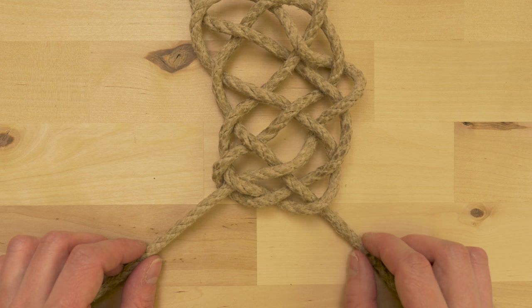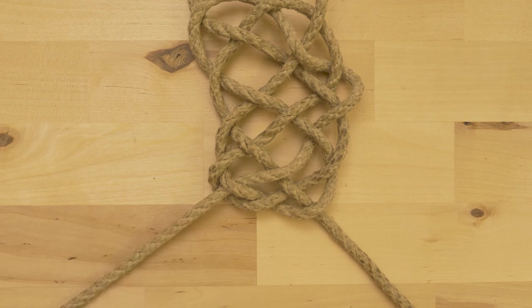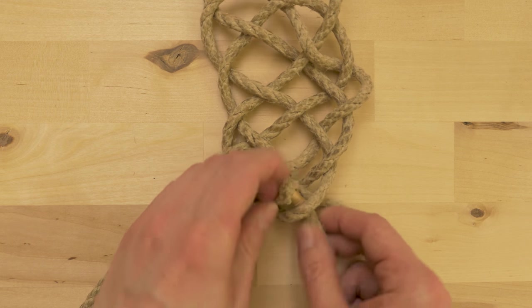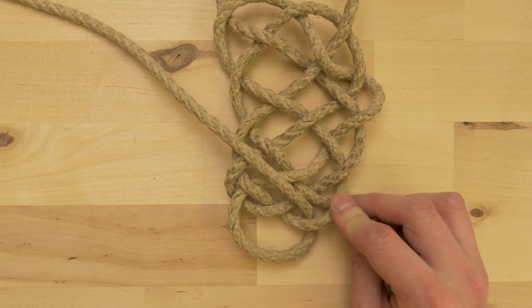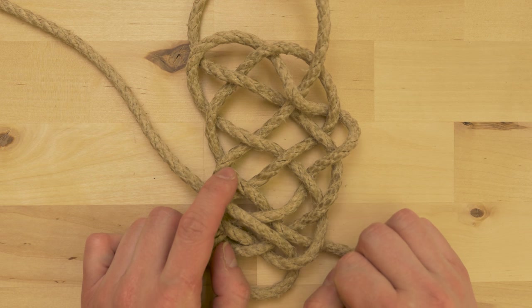The last step in creating this mat is to take one of the ends and place it next to the other end. This creates our last bite. Now if you look at our mat, it doesn't look like much. It is over tightened.